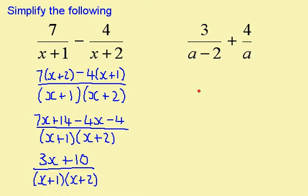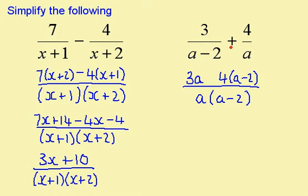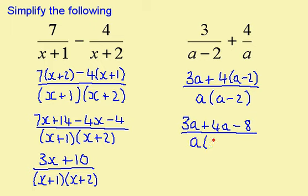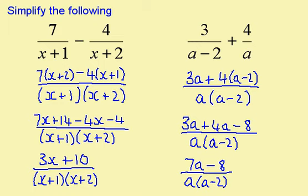My common denominator here is going to be a times (a minus 2). a minus 2 goes into this a times, so I multiply the 3 by a. a goes into this (a minus 2) times, so I multiply the 4 by (a minus 2), and it's an addition. Now I'm going to multiply out this bracket on the top but not the one on the bottom. So I have 3a plus 4a minus 8 over a(a minus 2). Simplifying the top gives me 7a minus 8 over a(a minus 2). The reason I multiplied out those brackets was to combine them into a simpler form, while these are already in their simplest form.